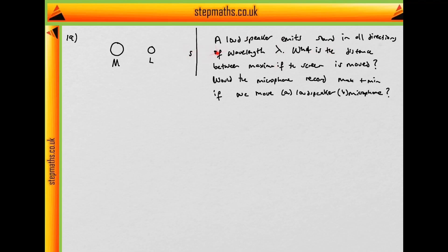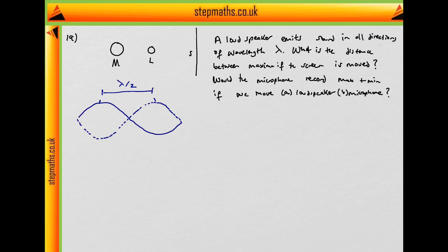The first part of the question says: if the screen is moved, we record maxima and minima. We're asked what is the distance between positions of the screen such that maxima are recorded — i.e., what is the distance between successive maxima? So let's sketch this. We're going to have a standing wave. The waves come from the loudspeaker, hit the screen, and reflect off. Our maxima are here and here, and that difference is clearly one-half the wavelength, or lambda over 2. So that's our distance.